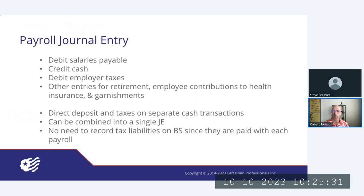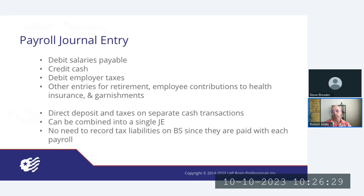Typically most payroll providers do two cash transactions: one to take the money for direct deposits, and a separate cash transaction to cover all the taxes — both employer and employee portions — depositing them to the appropriate agencies. You can combine all of this into a single journal entry, which is very helpful, or you can still do them as separate journal entries. There's really no right or wrong approach.